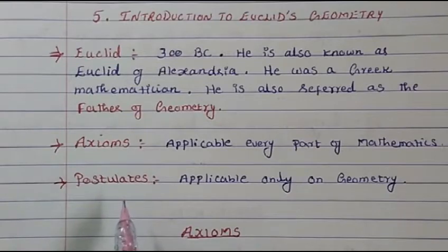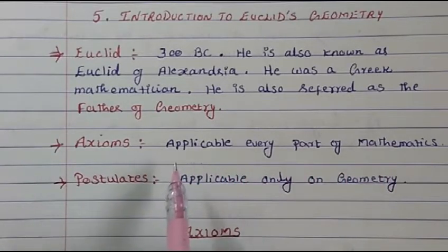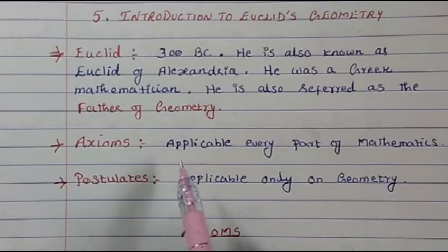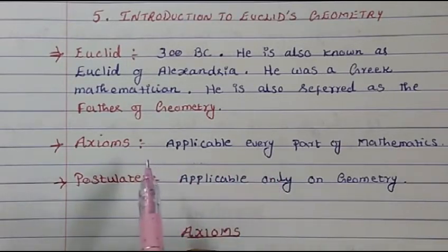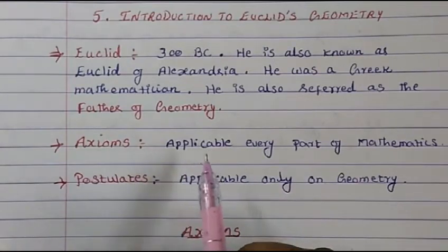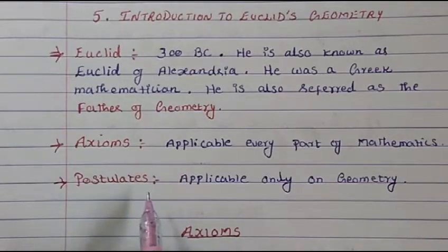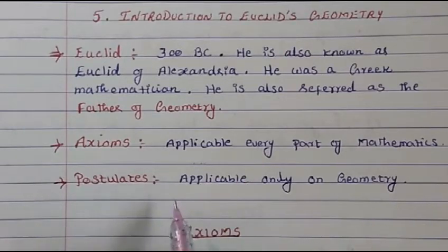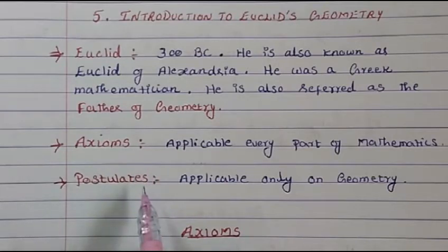Euclid gave us some axioms and postulates. Axioms are applicable to every part of mathematics — whether geometry, polynomial, trigonometry, or algebra. For example, 1 plus 1 equals 2 in any field of maths. Postulates, on the other hand, are applicable only to geometry. There are seven axioms and five postulates in your textbook.